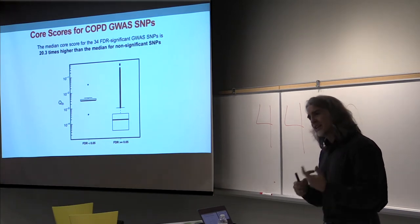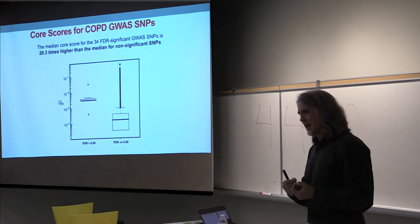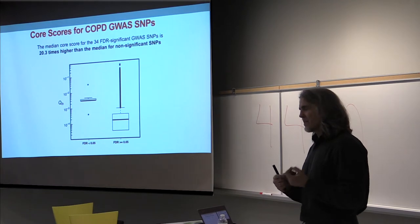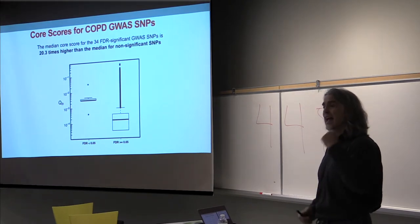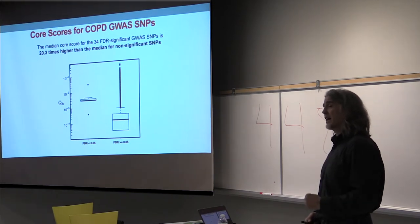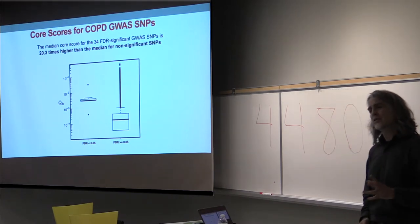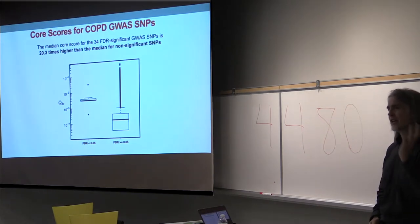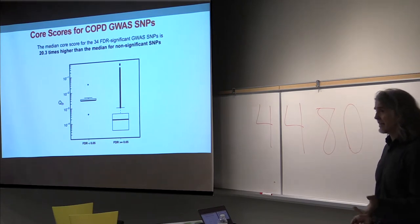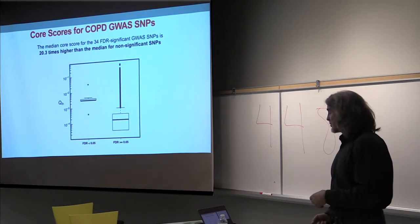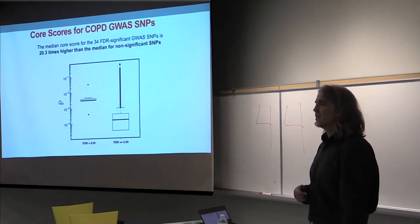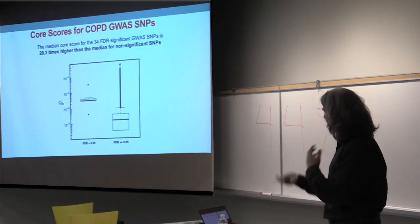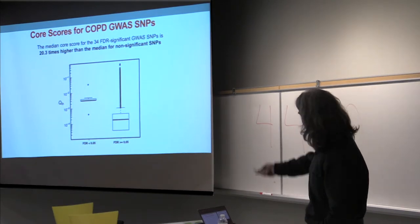We took 34 GWAS SNPs — and the fact that they were GWAS SNPs never entered into this analysis — and mapped them back to the communities. 33 of the 34 mapped to three communities, all of which have functions associated with COPD. The average core score for these SNPs was 20 times higher than the average core score in the network. These SNPs are at the center of their communities, most likely contributing to influencing the biological process represented in that community.